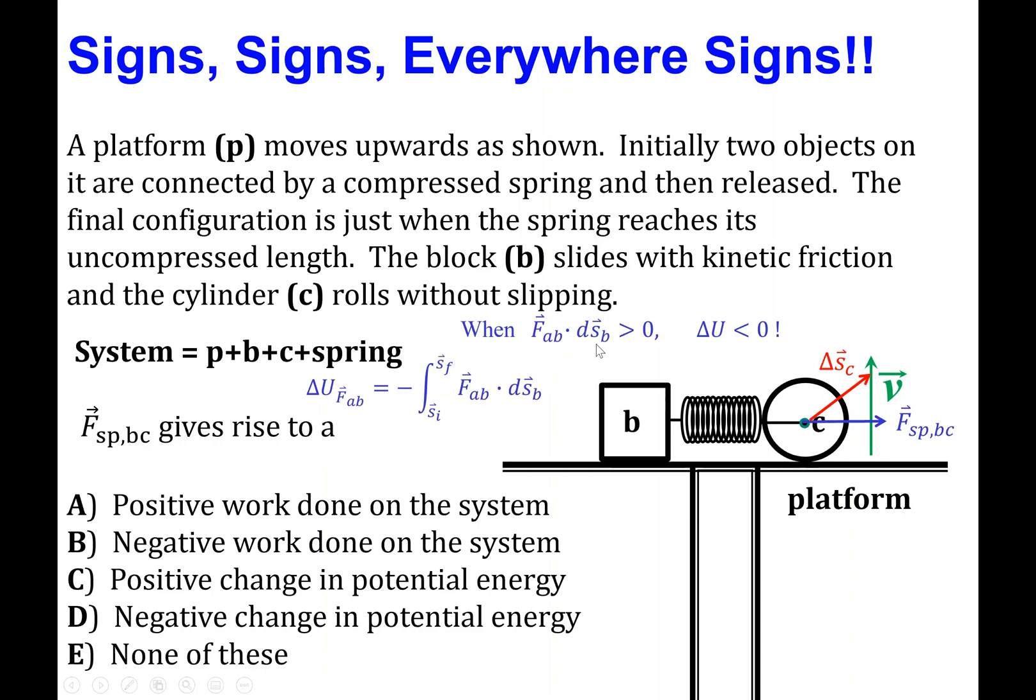And then, of course, ds as a vector is just referring to a small or infinitesimal displacement vector at every single point along that path.